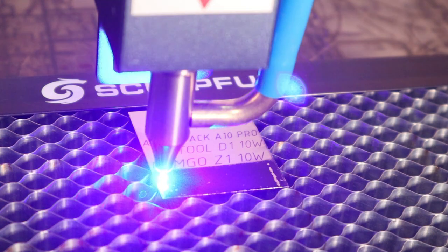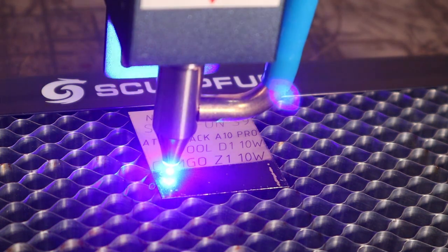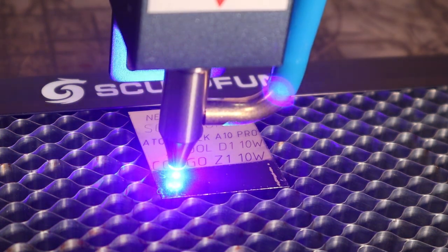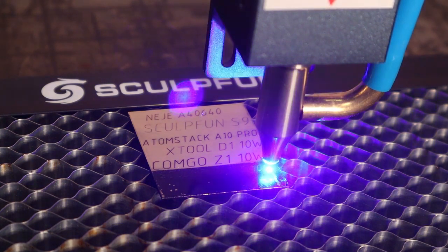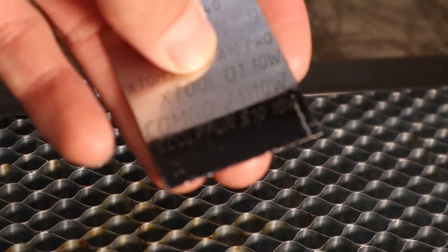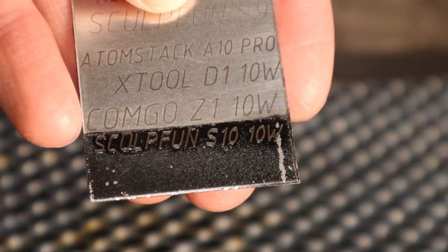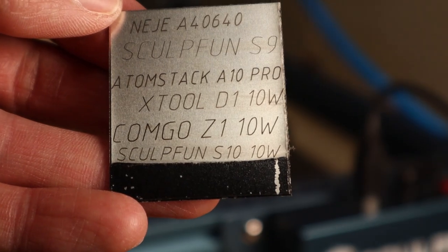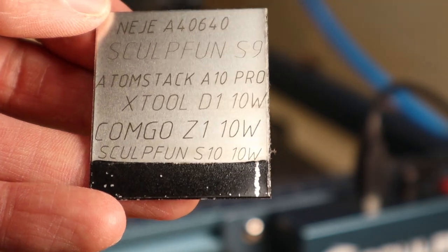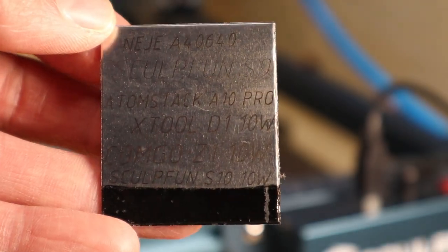Lastly, I tried engraving the stainless steel that I blackened with a black spray paint. I used a very slow speed of 200mm per minute and full power. The engraving came out very nice. This machine is a very good engraver for stainless steel.